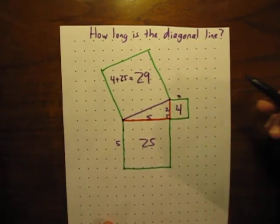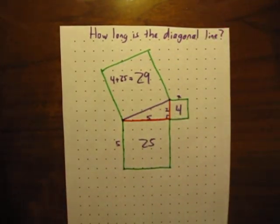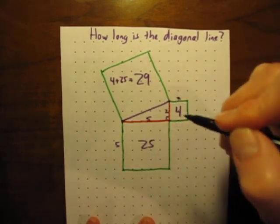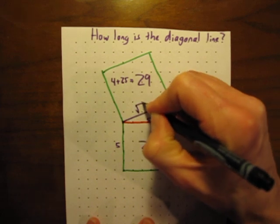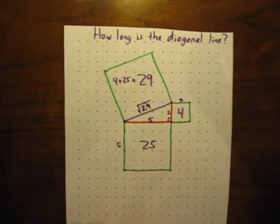So the side length, so the area of the square is 29. What about the side length, the length of this here? If we know the area of the square is 29, the side length is going to simply be the square root of 29.